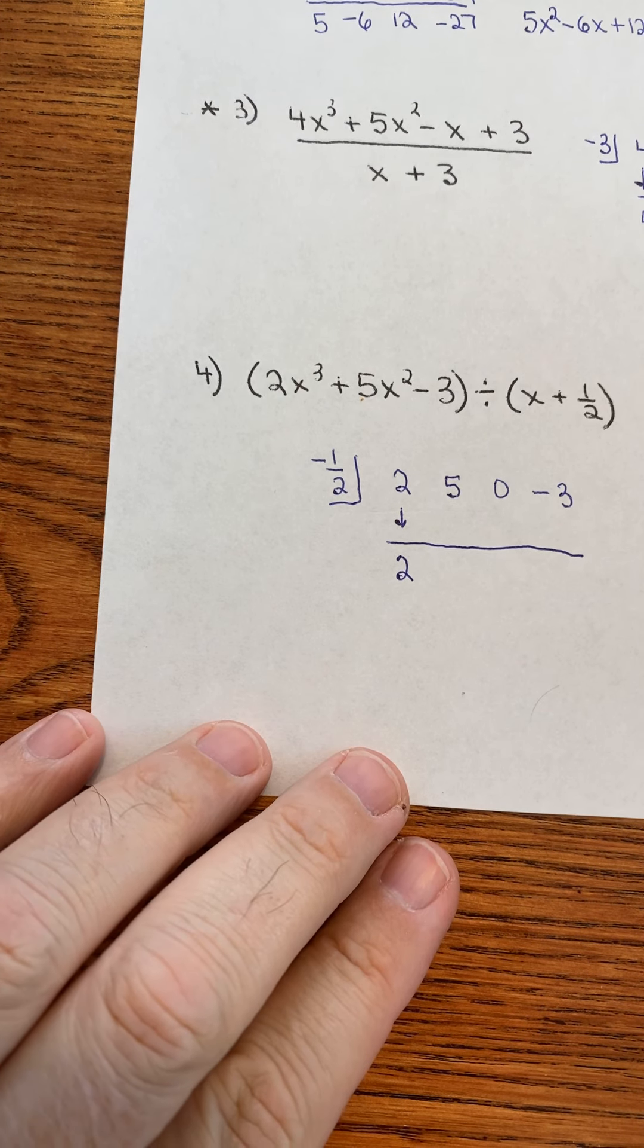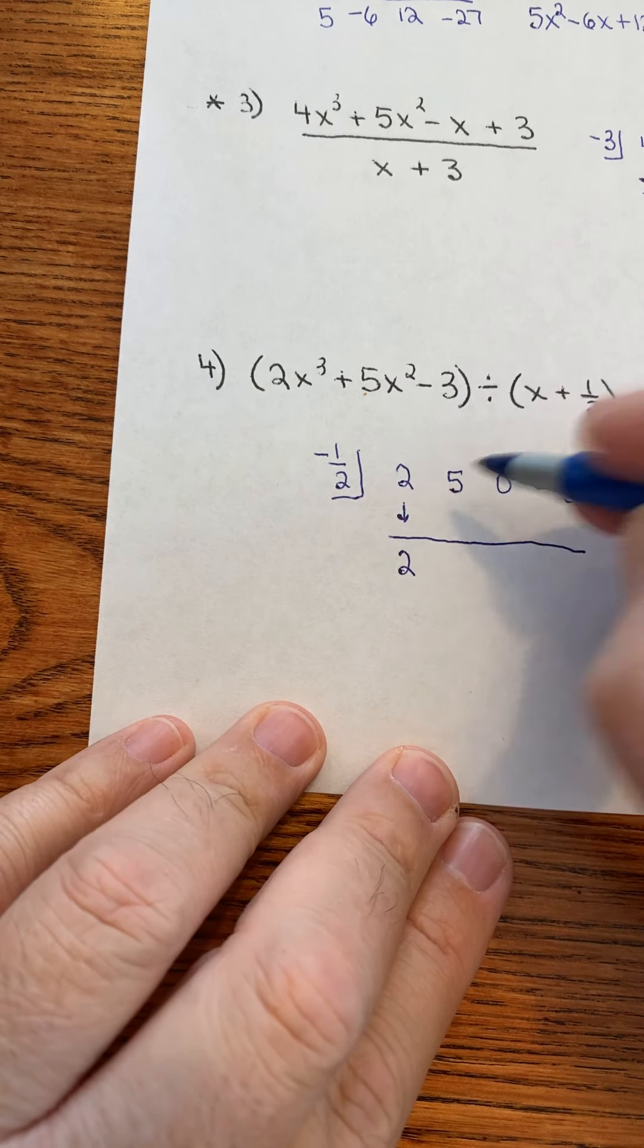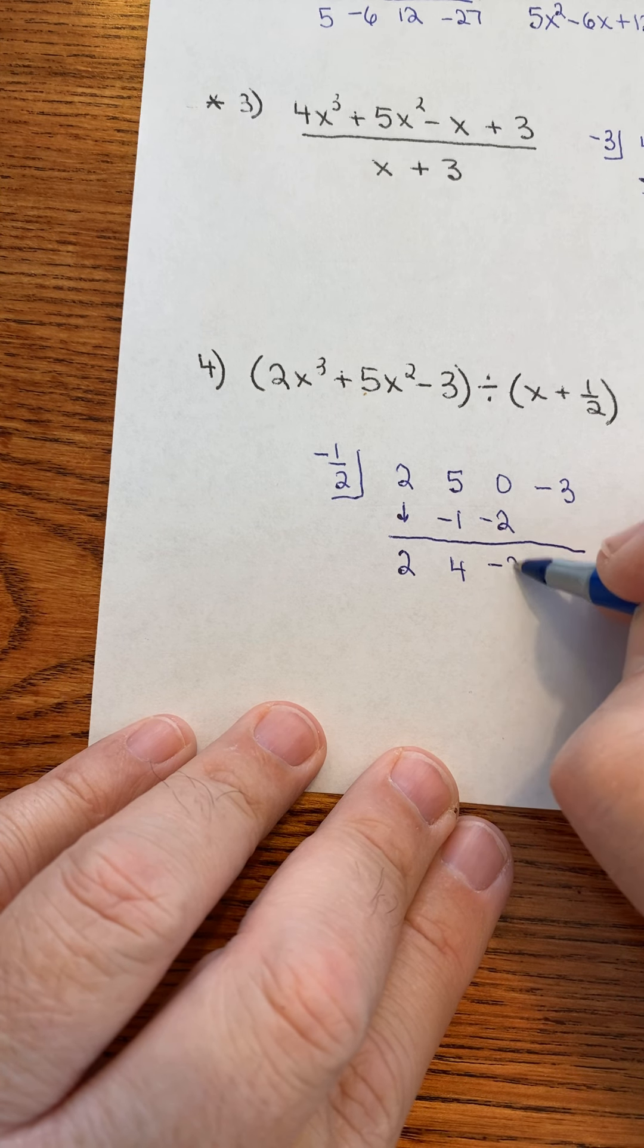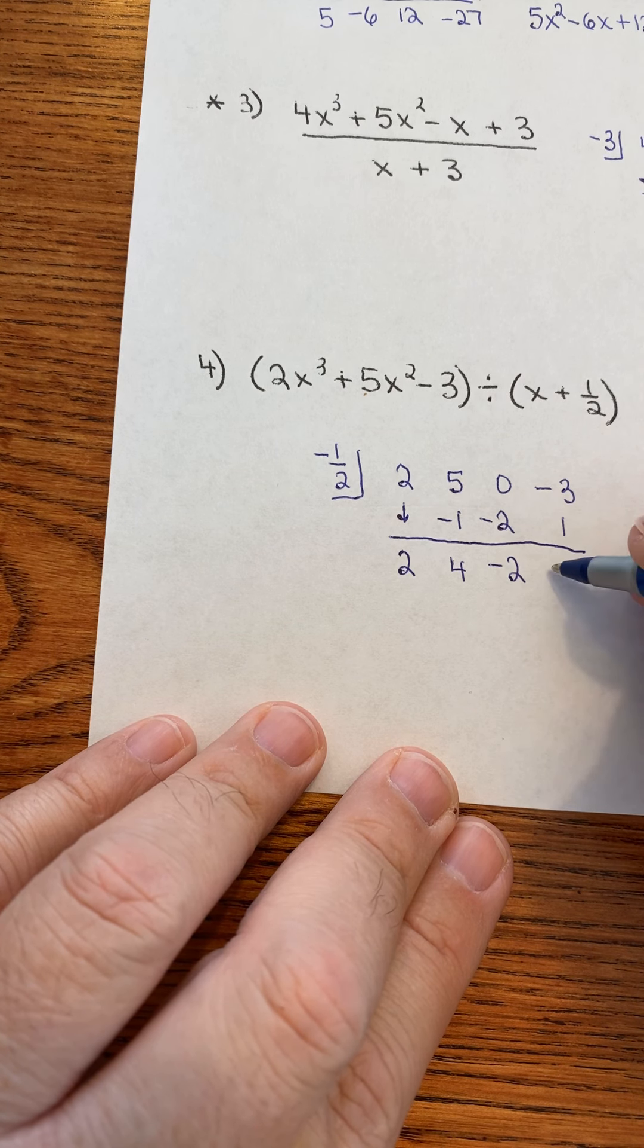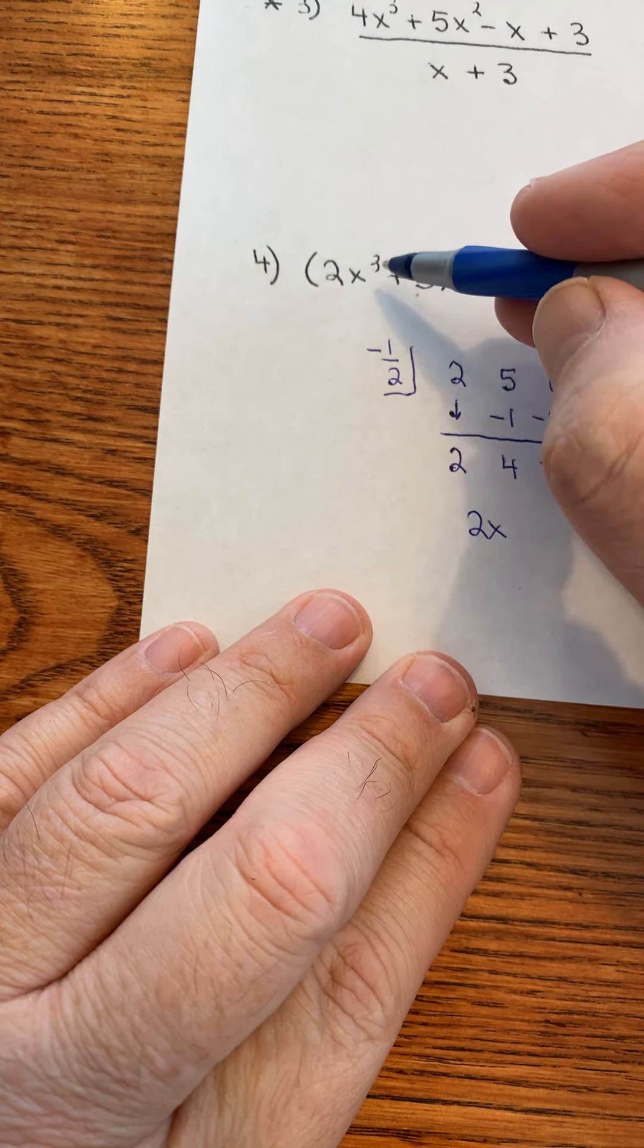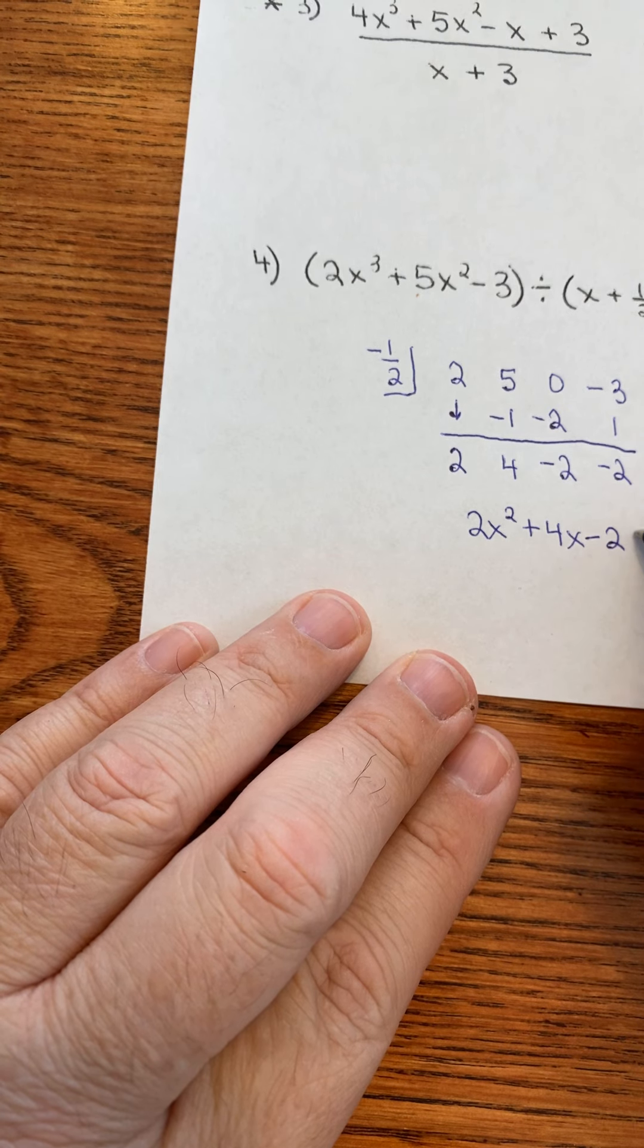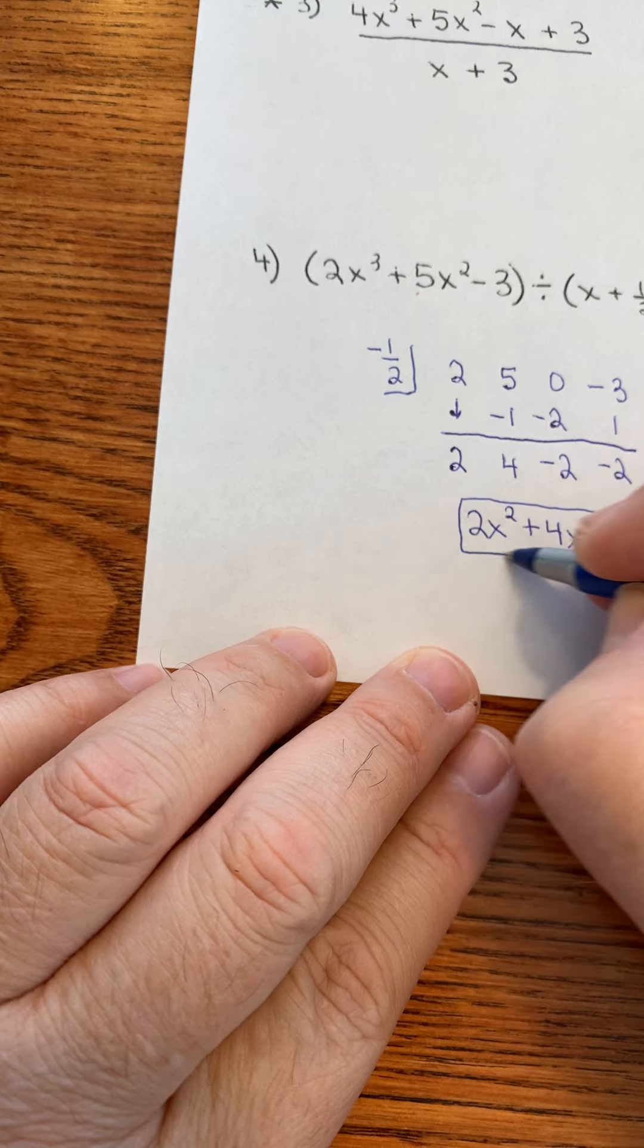Now, I made this one really nice. So, when you multiply by the fraction, you get integers, not fractions. Half of 2 is 1. But, a negative times a positive would be a negative 1. Add these two numbers up. You get 4. Half of 4 is 2. But, that would be negative. Add those up. You get negative 2. Times a negative is a positive. Half of 2 is 1. And then, my answer comes from this. It would be 2x. Again, 1 less than that original exponent. 2x to the second plus 4x minus 2 with a remainder of negative 2. That is my answer to this problem.